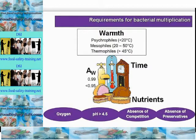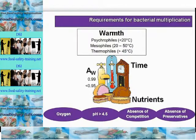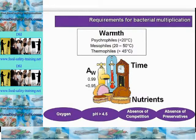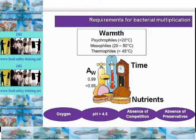Food spoilage bacteria do affect the taste, colour, and smell of food. Some bacteria require oxygen while others can survive without it; these are called aerobes and anaerobes, which can be obligate or facultative. Regarding pH or acidity, most bacteria prefer around pH 7 which is neutral; below 4.5 most do not multiply, though some such as E. coli O157 can survive at pH 4.5 for some time and are classed as acid tolerant. Food poisoning bacteria tend to be less competitive than natural flora — hence the doctor's reluctance to prescribe antibiotics. Bacteria also prefer an absence of preservatives, as these inhibit bacterial growth.